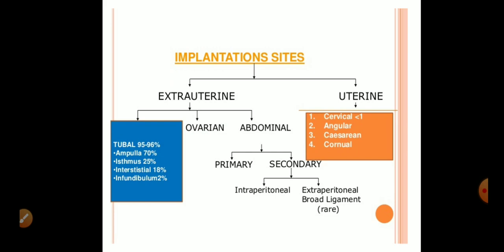For uterine implantation sites: cervical implantation occurs in the cervix; angular pregnancy occurs in the upper part of the uterus near the uterotubal junction; implantation can also occur in the lower uterine segment; and corneal implantation is in the cornual region of the fallopian tube at the lower part of the uterus.